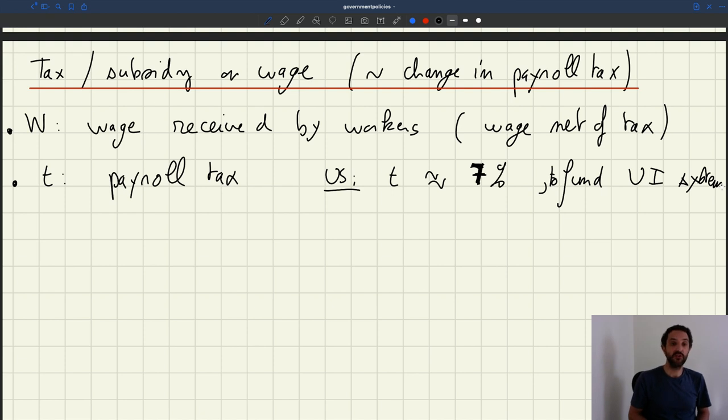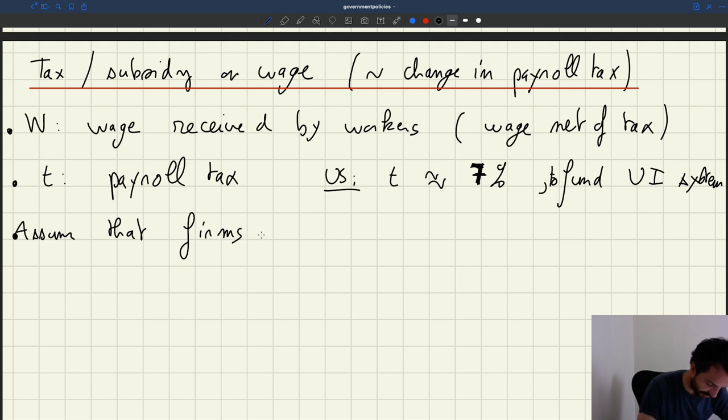So now what is the wage paid by the firm? It's the wage received by the worker, but of course there is also this payroll tax on top of it. Who pays the payroll tax is not really relevant. Here to simplify, we can assume that firms pay the payroll tax.